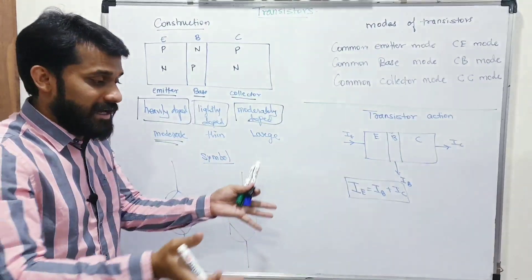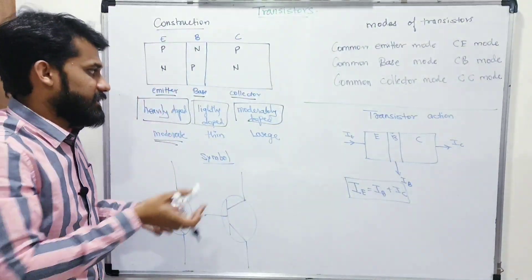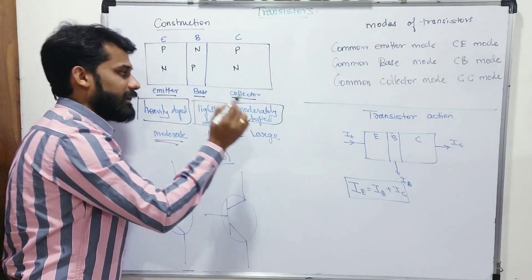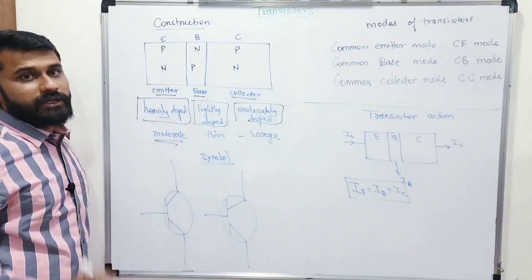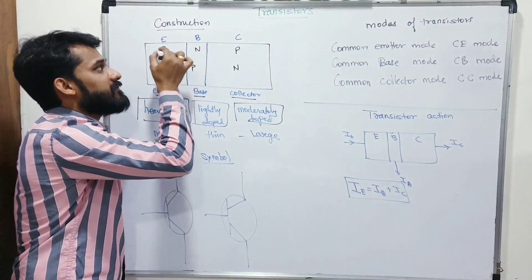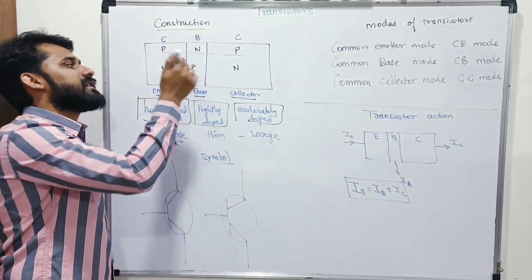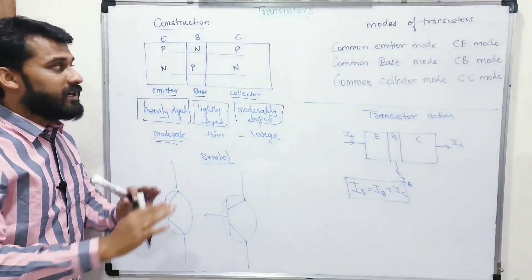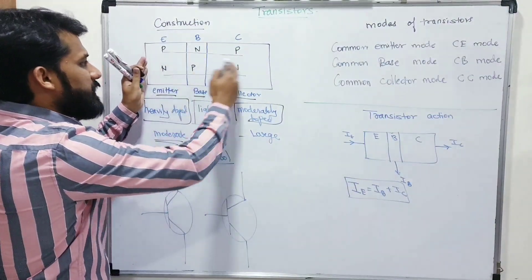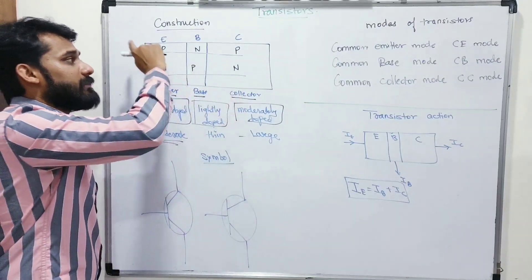Size-wise: emitter is moderate in size with very heavy doping, base is very very thin with very light doping, and collector is very large in size with moderate doping. The collector is large because it wants to collect the charges. A transistor will be either a PNP transistor or an NPN transistor — not NNP or PPN. It is always alternating: PNP or NPN.